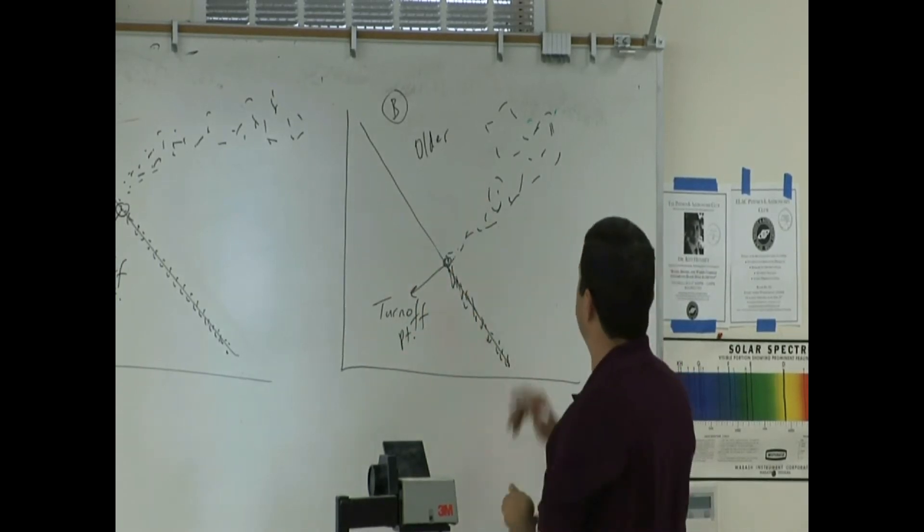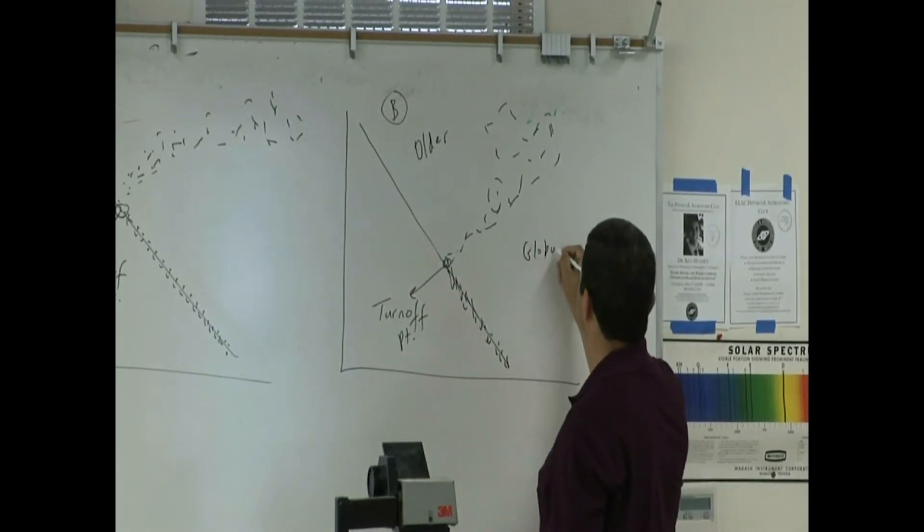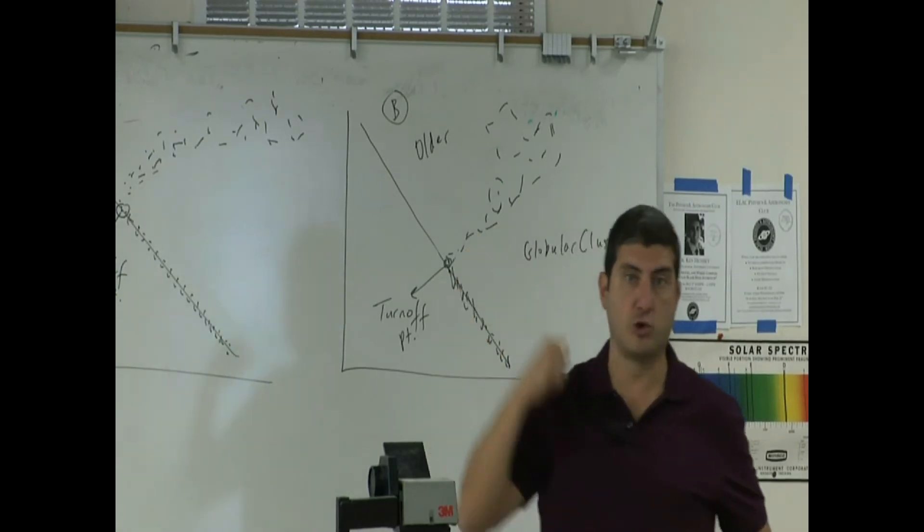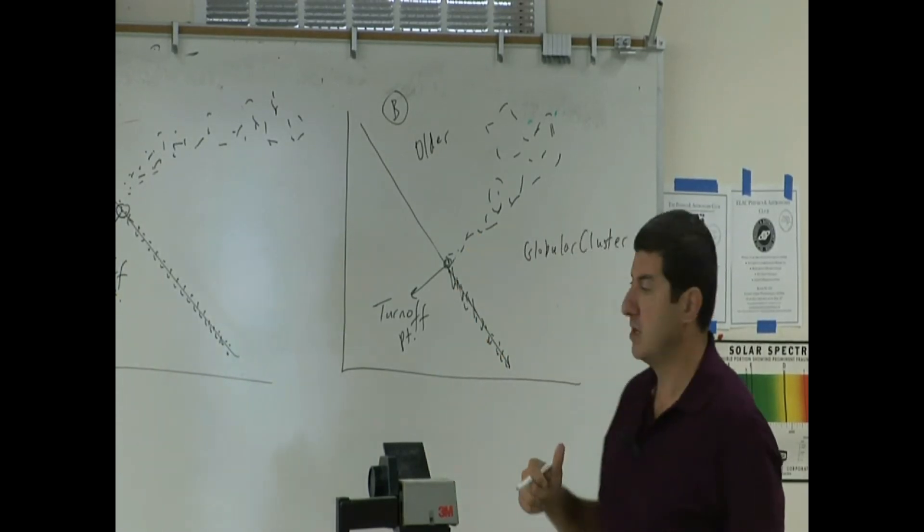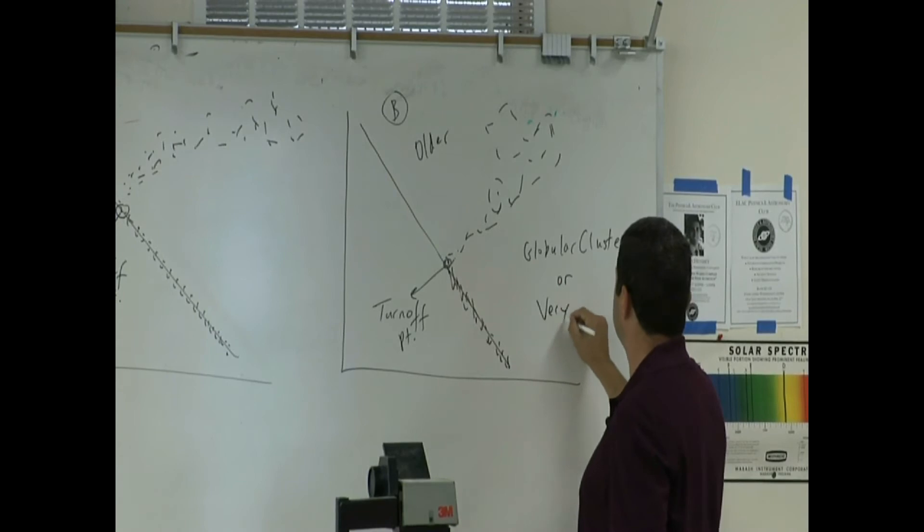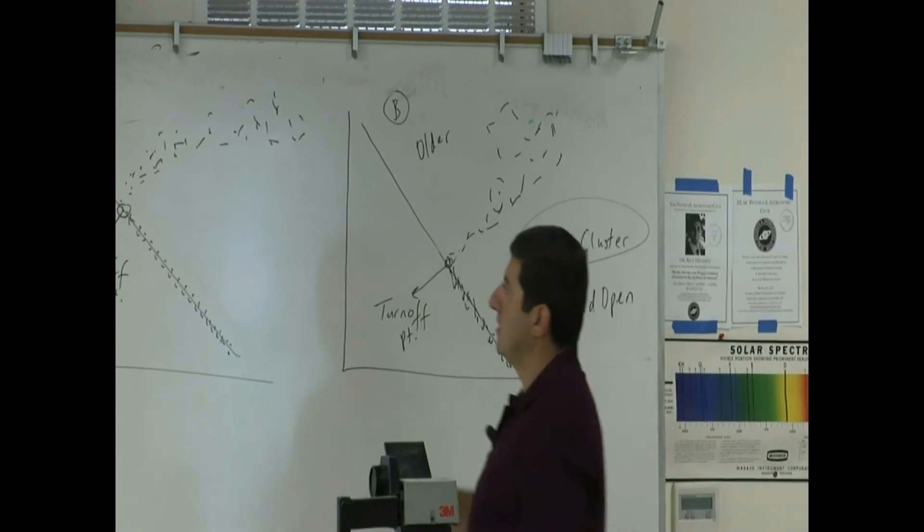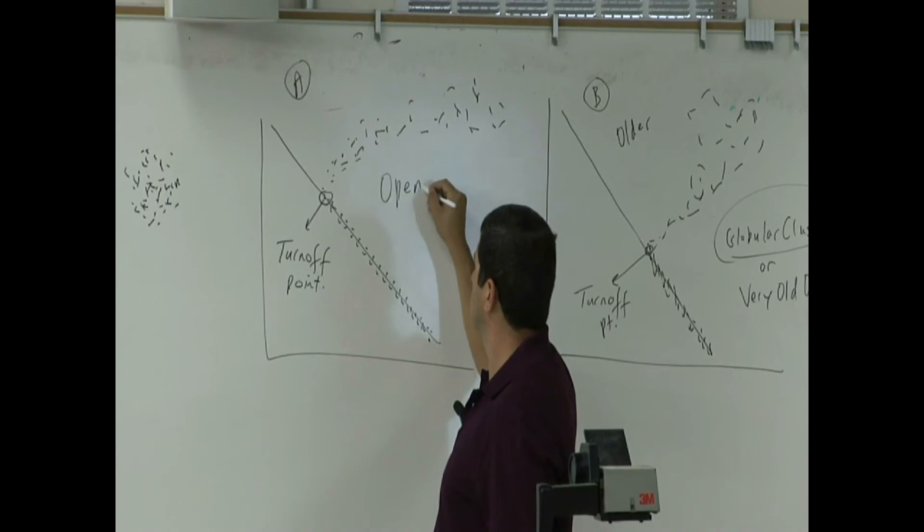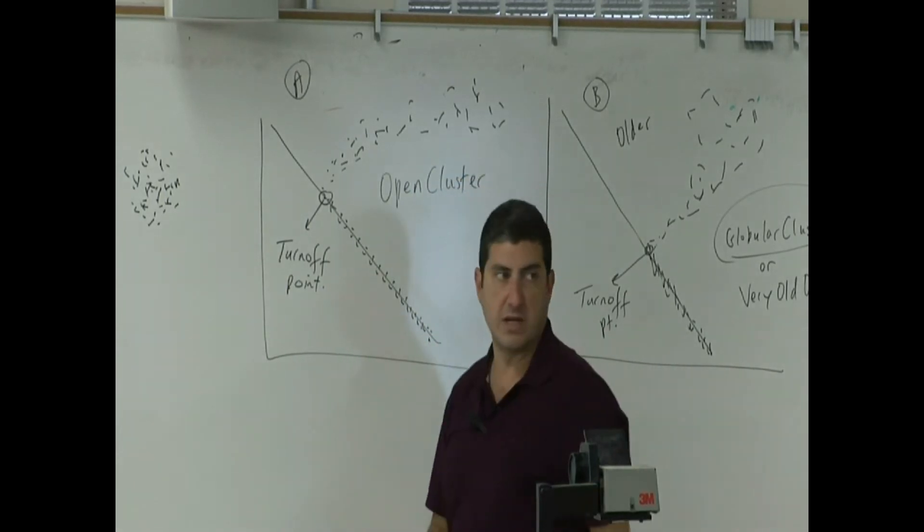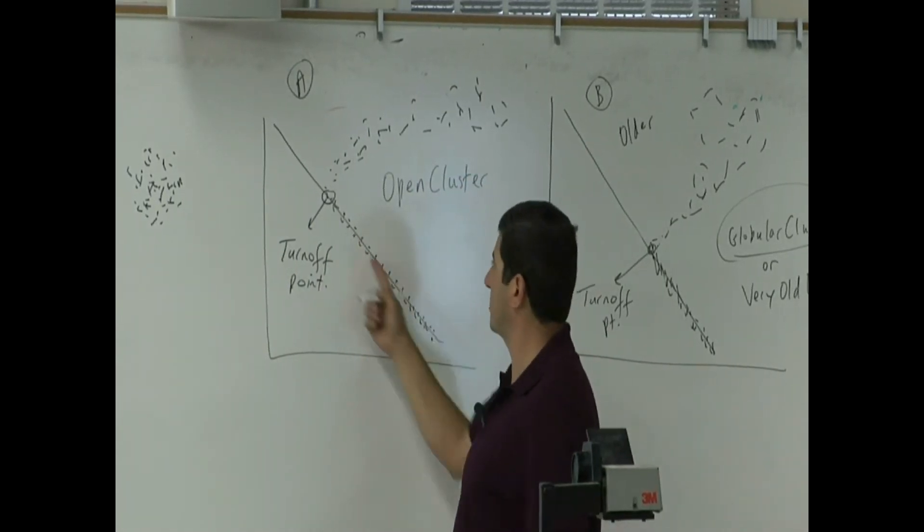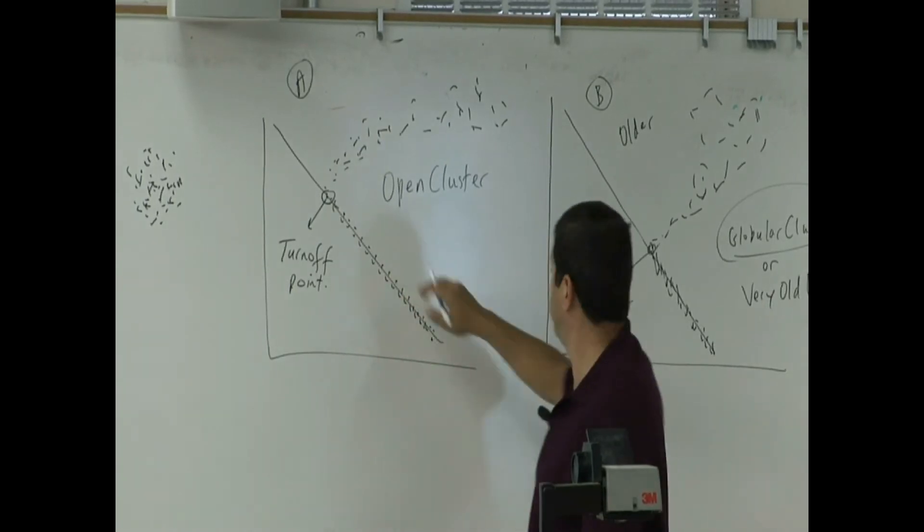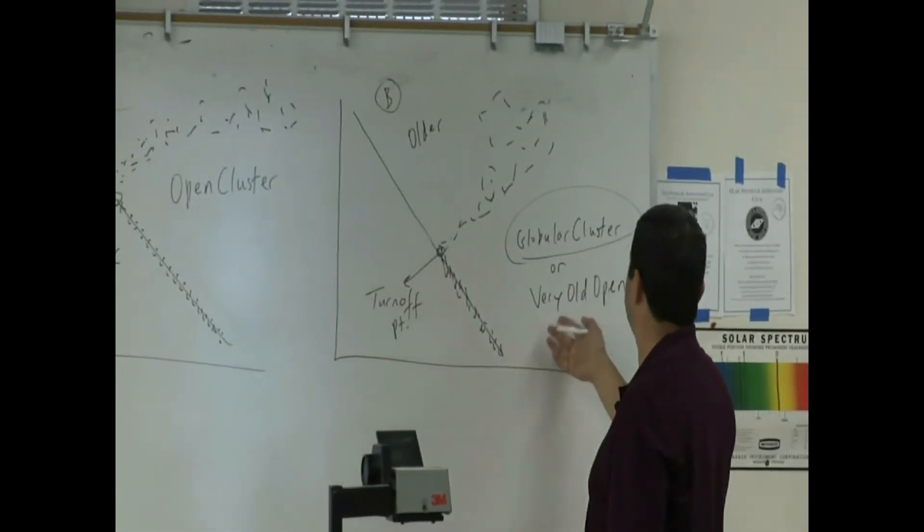So this is more likely to be a globular cluster, or even if it is an open cluster, it's a very old open cluster. So it's either a globular or very old open cluster, but more likely globular. This might be more likely open because it still has a lot of young stars. It still has a lot of blue stars, stars that are shining. More likely open. This is more likely globular, but maybe very old open.